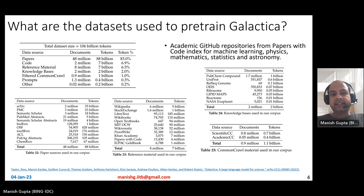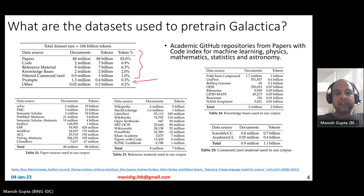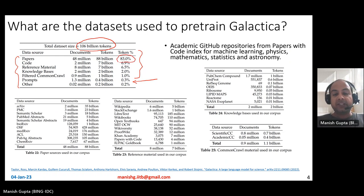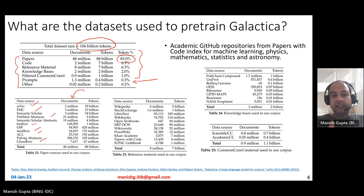The pre-training dataset for Galactica contains 106 billion tokens from several data sources: papers, code, reference material, knowledge bases, common crawl, prompts, and other scientific sources. Papers comprise about 83% of Galactica's training data, coming from sources including ArXiv, PMC, PubMed, BioArXiv, MedArXiv, ACL, ChemArXiv, and so on. Code has been taken from academic GitHub repos linked from the Papers With Code website, covering topics like machine learning, physics, mathematics, statistics, and astronomy.